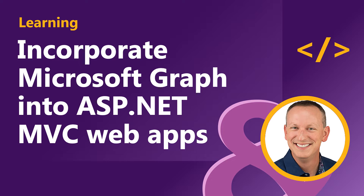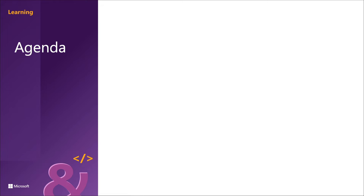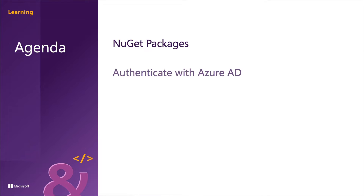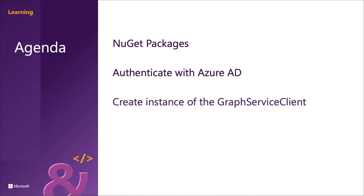In this section, you're going to learn how to customize and configure an ASP.NET MVC web app to request and integrate data obtained from Microsoft Graph. We're going to see the NuGet packages involved, how to authenticate with Azure AD, creating an instance of the Graph service client, and how to issue requests and process results.